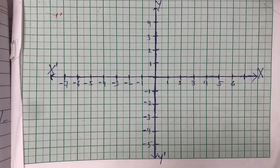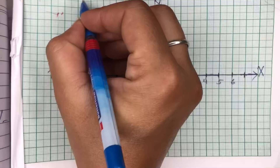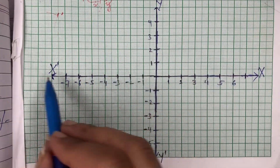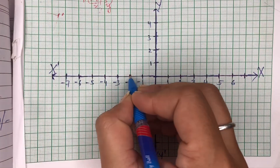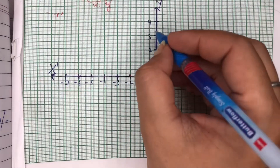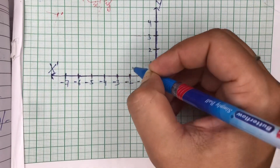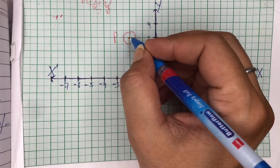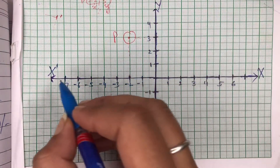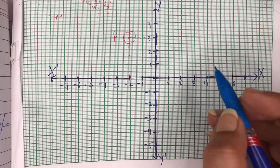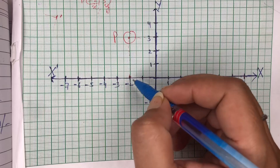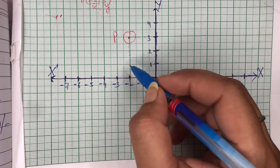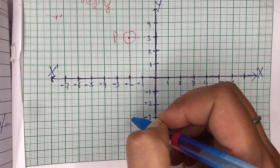Ab dekho, hamare paas P-coordinate hai minus 2, 3. First coordinate X hota hai, second Y. X kitna hai — minus 2 — ye X-axis hai, ismein minus 2 yahan par aa raha hai. And Y positive 3 — ye wala. Ab in ko hum yahan par dekhenge ki kahan par meet kar raha hai — ye wala point aa raha hai, ye kya hai P. Ab iski reflection karni hai in the X-axis, means X-axis ko as a mirror consider karna hai. Aur humne physics mein padha hai ke mirror ke in front of jitne distance par object pada hota hai, utne hi distance par behind the mirror image form hoti hai.